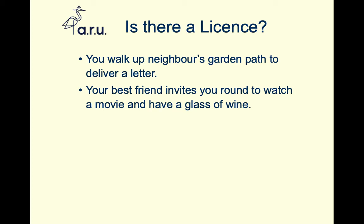Thinking about revocability: the neighbour could revoke or exclude — they can ask you to leave, or could even have prohibited your entry at the outset with signage or a locked gate. With the express invitation, it would have to be revoked in some way — you'd have to ask somebody to leave — and at that point they would become a trespasser. Referring back to cases like Robson v Hallet and Bolotti, what would be a reasonable amount of time to allow that person to leave.